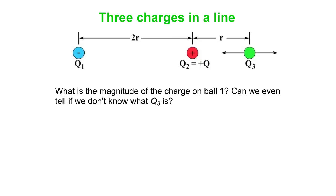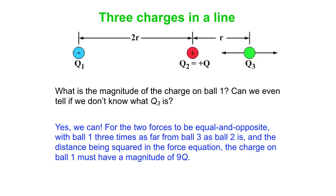What about the magnitude of the charge on ball one? Can we even tell if we don't know what Q3 is? Well, it turns out that we can. For these two forces to be equal and opposite, ball one is three times as far away from ball three as ball two is, and the distance is squared in the force equation. So the charge on ball one must have a magnitude of 9Q.